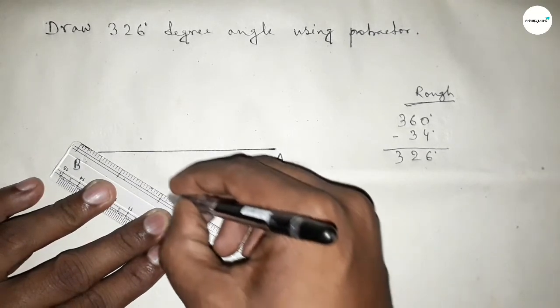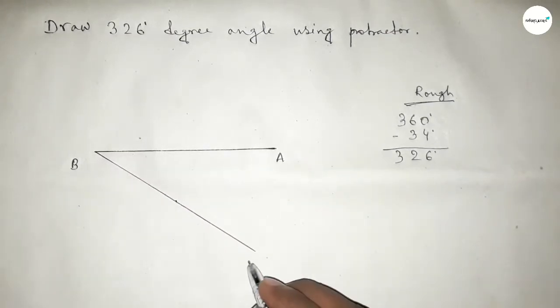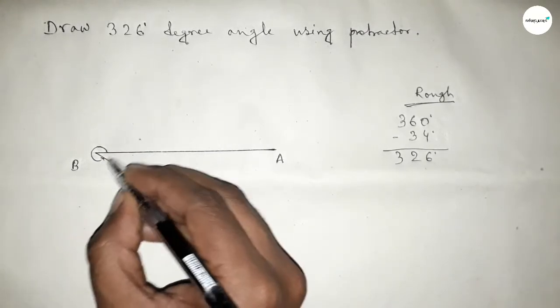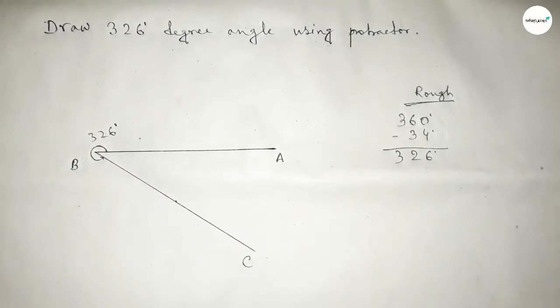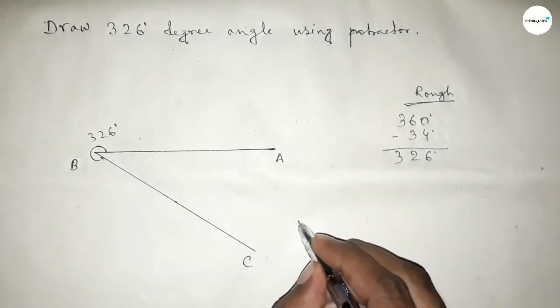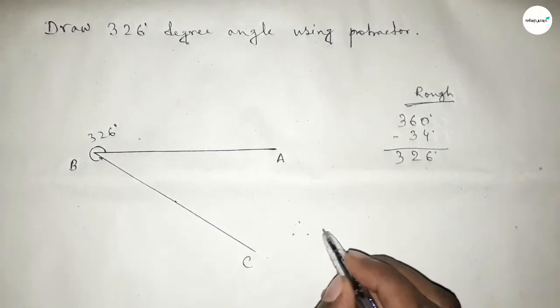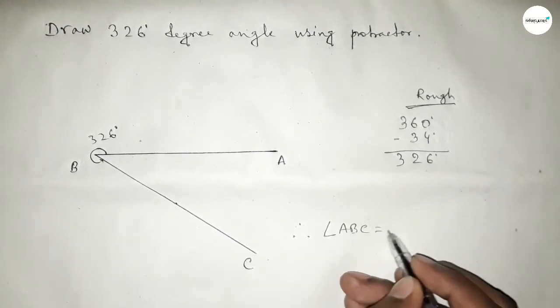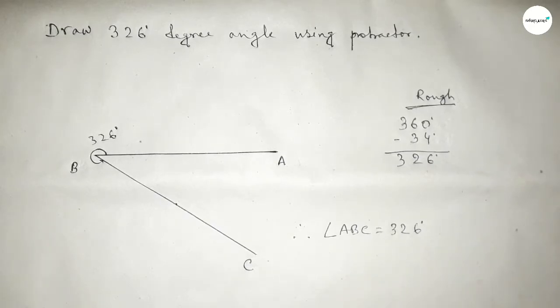Now drawing this line and taking here point C. So angle ABC, up to this, is 326 degrees. Therefore, angle ABC equals 326 degrees. That's all, thanks for watching.